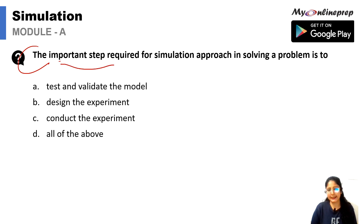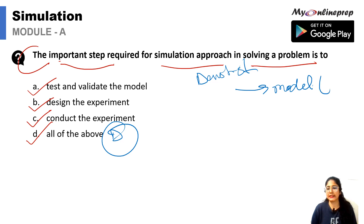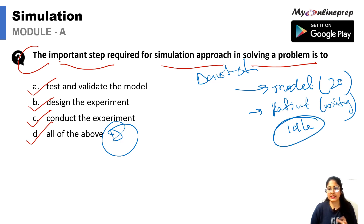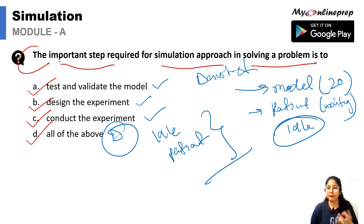The last question for this chapter: the important steps required for the simulation approach to solving a problem are — test and validate the model, design the experiment, conduct the experiment, or all of the above. All of the above is the correct option. In the dentist example, we first build and validate a model, design experiments for what each patient needs done, conduct them to record how long each patient takes, and then conclude the doctor's idle time and patient's average waiting time.